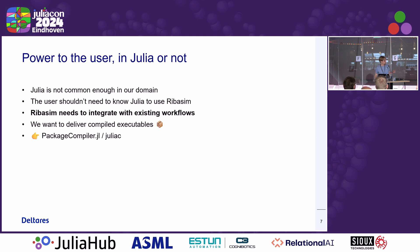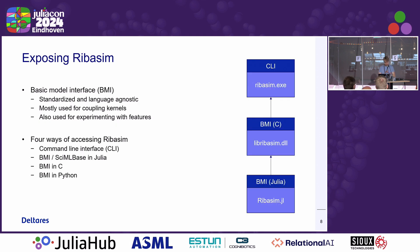We're making these executables using PackageCompiler. This week there was a talk about juliac, so we'll be able to get much smaller binaries in the future. For the cross-language coupling, we use an interface from CSDMS called the Basic Model Interface (BMI). It basically describes some verbs: how you initialize a model, how you do a time step, how you get the data out. There's a package, BasicModelInterface.jl, that provides empty function stubs that you implement on your own model type so you can communicate between modules.